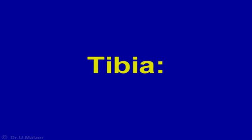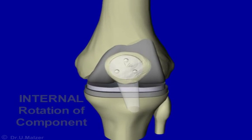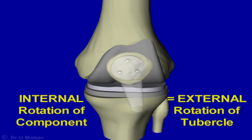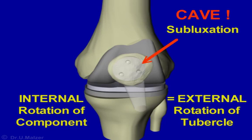Correct tracking of the patella is determined by the alignment of the tibial component. Above all, internal rotation of the tibial component must be avoided, since it would result in external rotation of the tibial tubercle. This, in turn, would lateralize the patella and make it prone to instability.